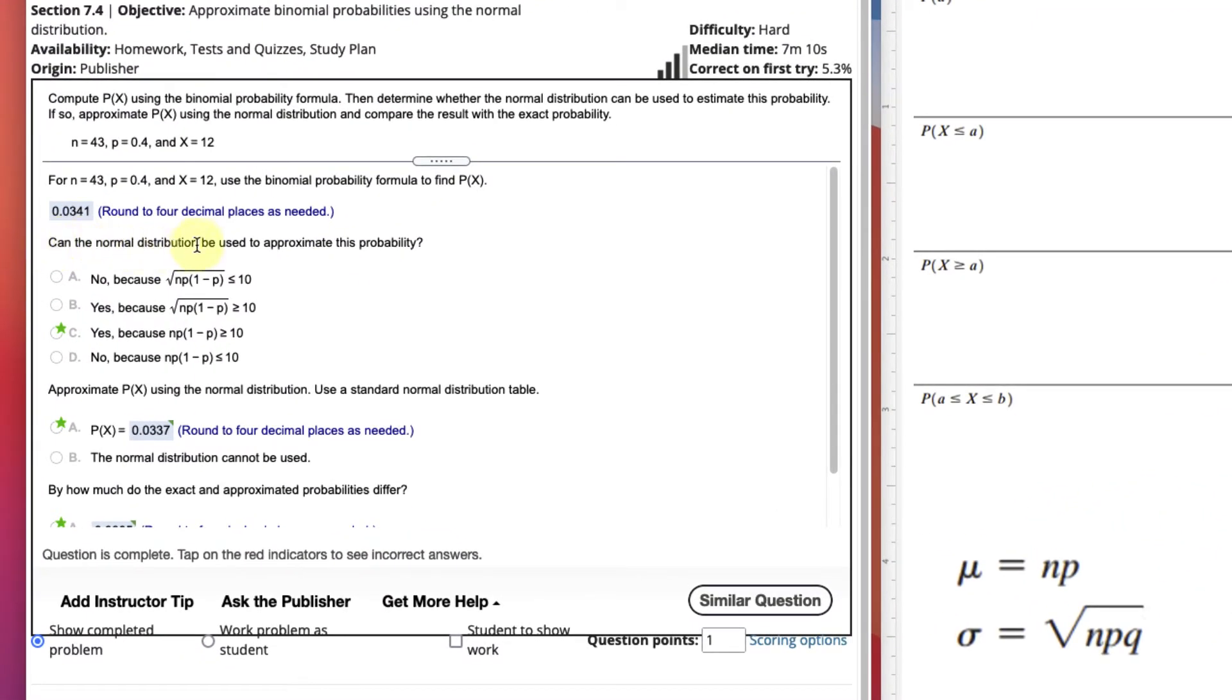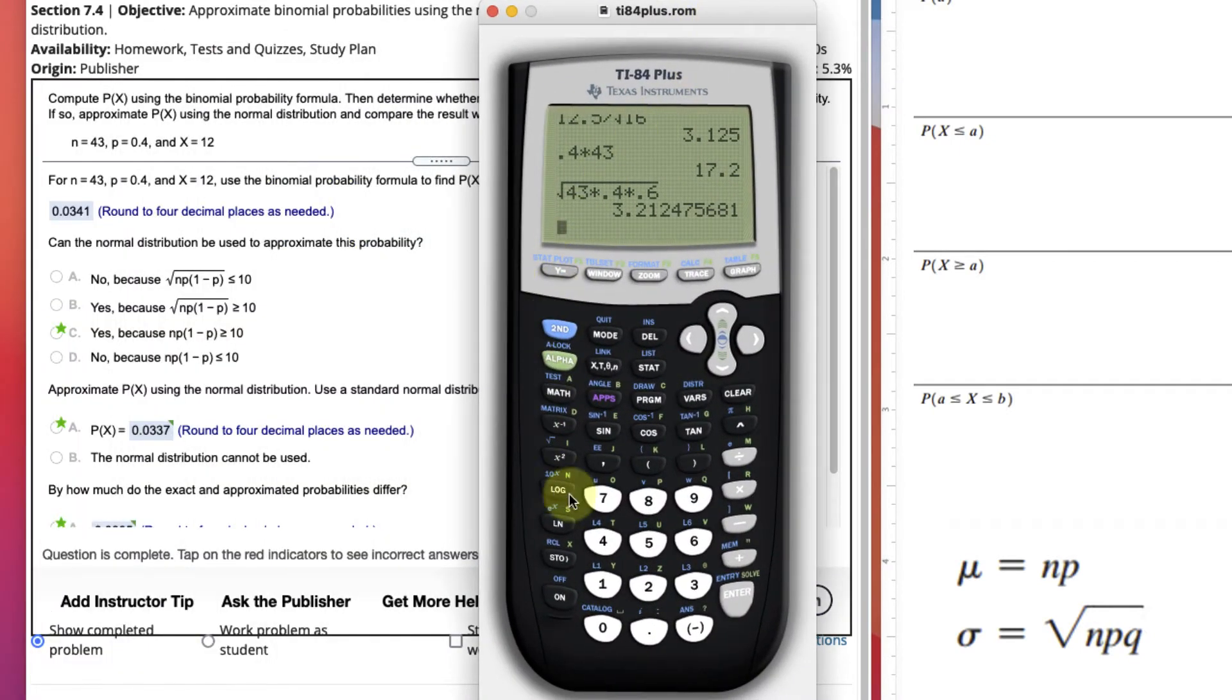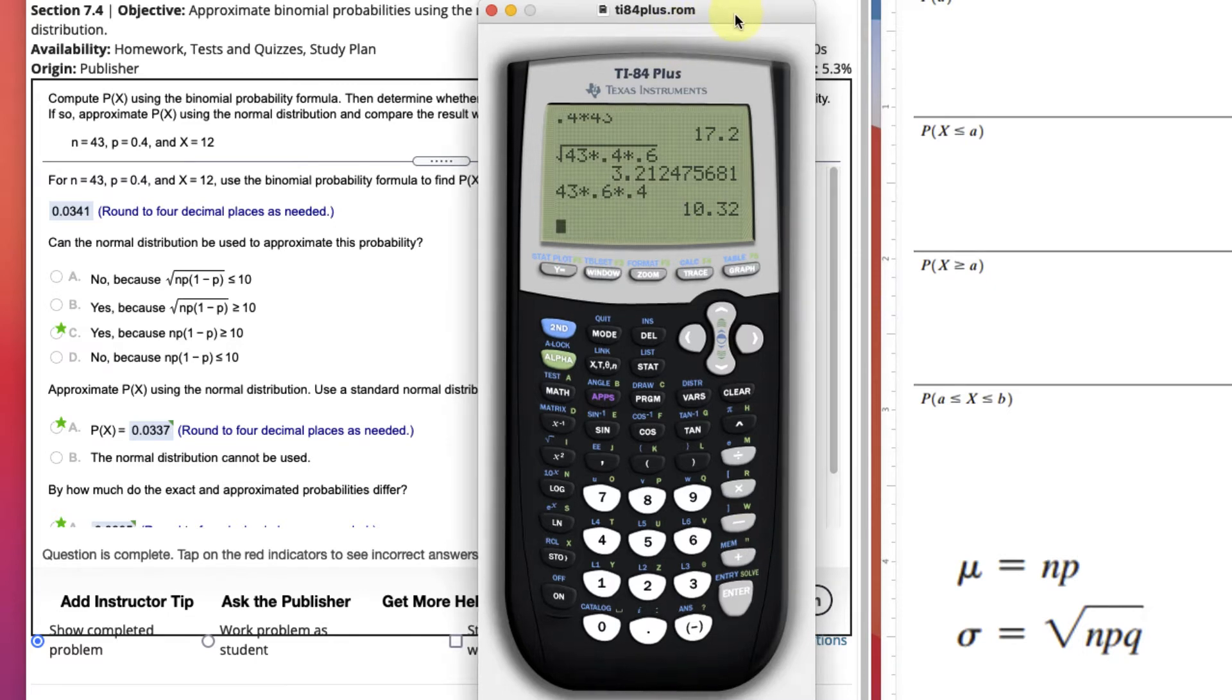This is a Sullivan problem for statistics, and you have to satisfy np times 1 minus p is greater than or equal to 10, or npq is greater than or equal to 10. So we'll just do that, 43 times 0.6 times 0.4. If that's greater than or equal to 10, which it is, just barely, you can do a normal approximation.